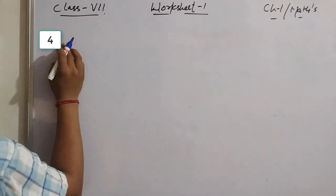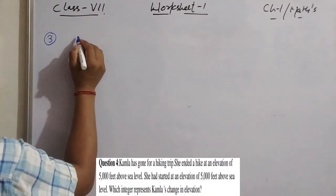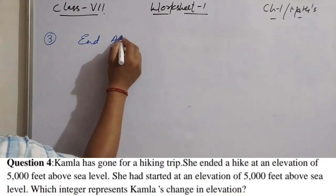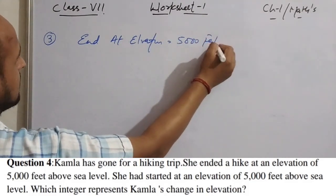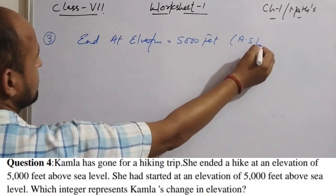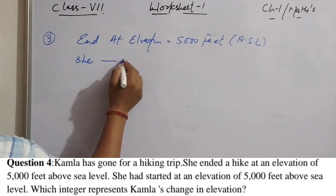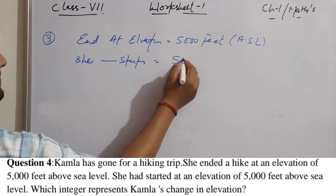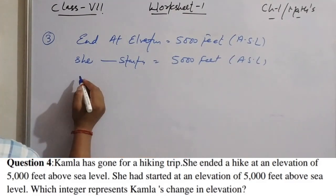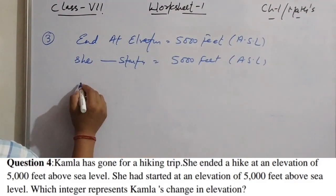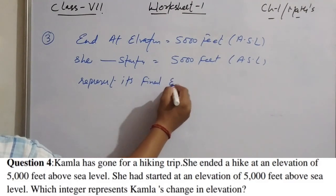The next question: Kamala went on a hiking trip and ended the hike at an elevation of 5,000 feet above sea level. She also started at 5,000 feet above sea level. The question asks which integer represents her final elevation.